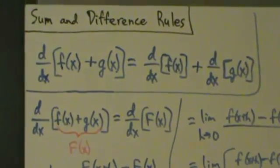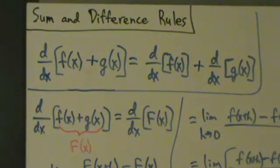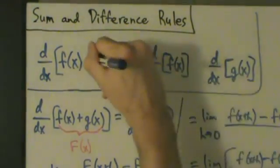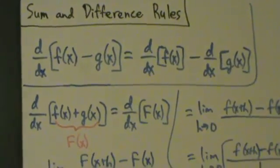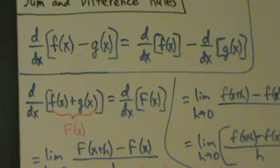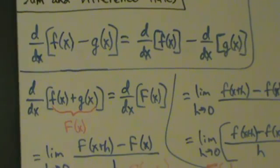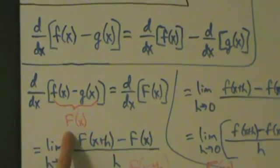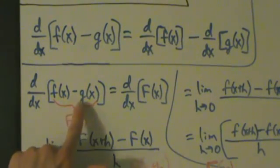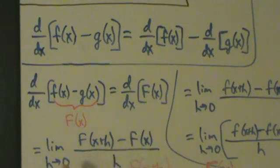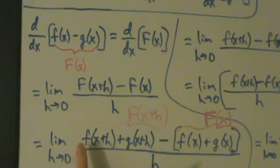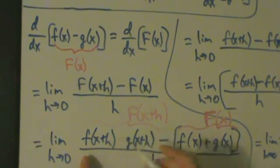The difference rule is actually pretty similar, so let's prove that now. What changes? Now big F(x) is going to be little f(x) minus g(x). The definition step stays the same, but now big F(x+h) is going to be f(x+h) minus g(x+h), because we have this minus sign. And big F(x) is f(x) minus g(x).